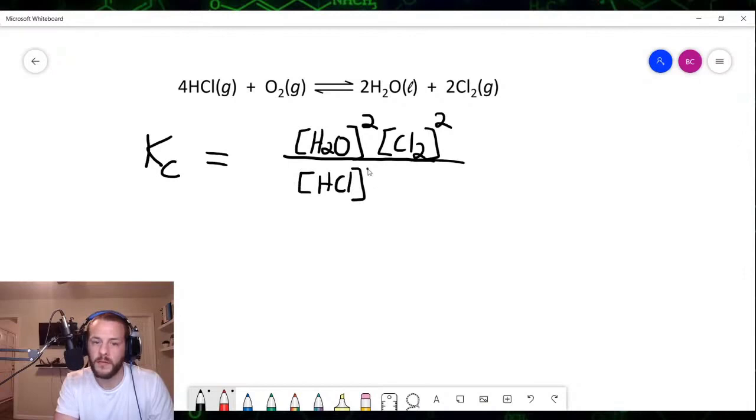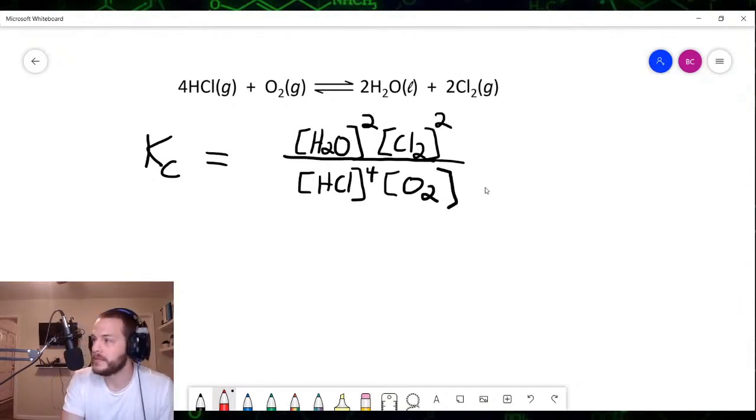times the concentration of O2 raised to the first power, or simply just the concentration of O2. So this is what we might expect to be the correct expression for the equilibrium constant for this heterogeneous equilibrium.